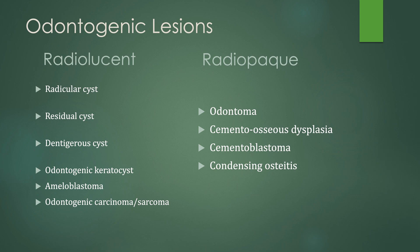We're going to divide odontogenic lesions into their imaging appearance: radiolucent lesions, including the cysts, the ameloblastoma, and odontogenic carcinoma or sarcoma, versus radiopaque lesions — the odontoma, cementoosseous dysplasia, cementoblastoma, and condensing osteitis. This is not a complete list of all of the lesions; these are just some of the more common ones that you can see.